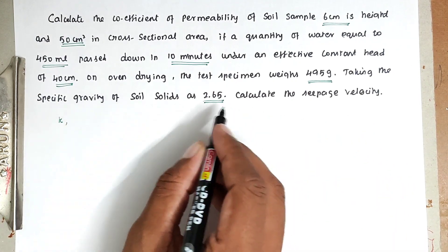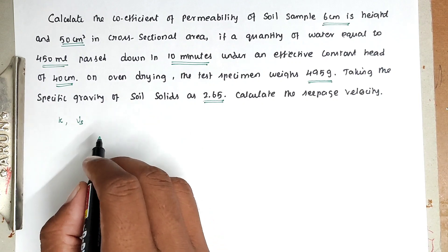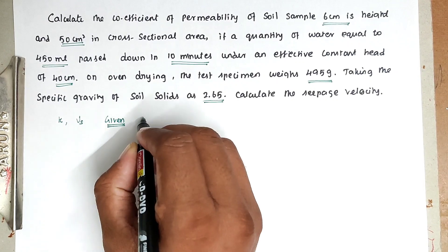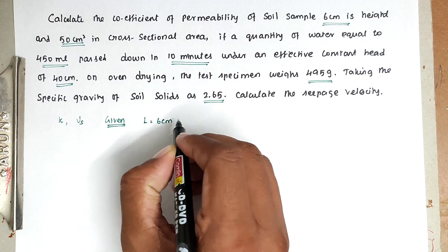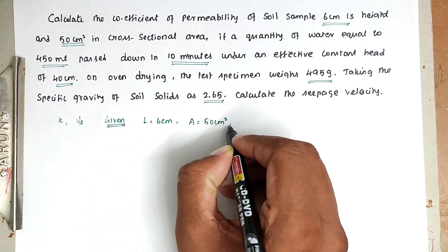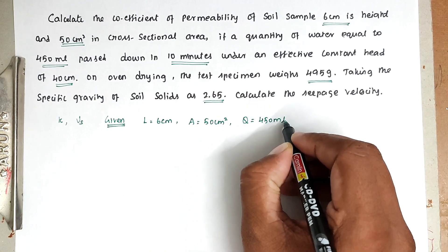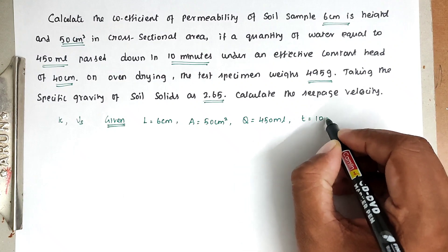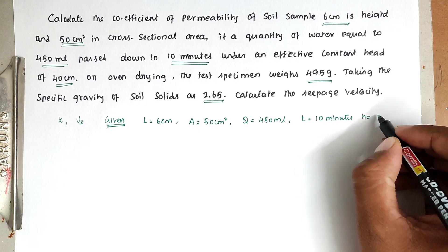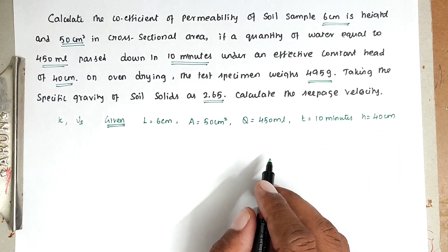We have to find out the coefficient of permeability K and the seepage velocity Vs. So the given values are: L = 6 cm, area A = 50 cm², quantity of water Q = 450 ml, time T = 10 minutes, and head H = 40 cm.